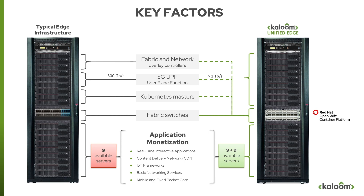The obvious way for a telco to deploy an edge data center is to convert existing legacy central offices. Unfortunately, central offices have space, power, and cooling constraints. In most cases, operators are limited by the power budget available — for example, with a 15,000-watt budget, there's a limited number of servers that can be deployed. Within this budget you may have 18 Xeon scalable servers, but commercial network fabric controllers and virtual network overlay managers typically require three fully dedicated physical servers.